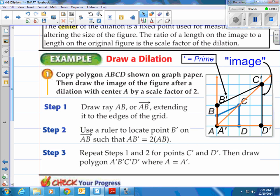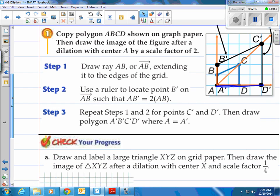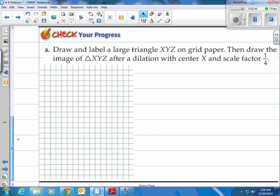If you look at each length of the sides. For instance AD right here is half the size of A prime, D prime. Alright, you try.